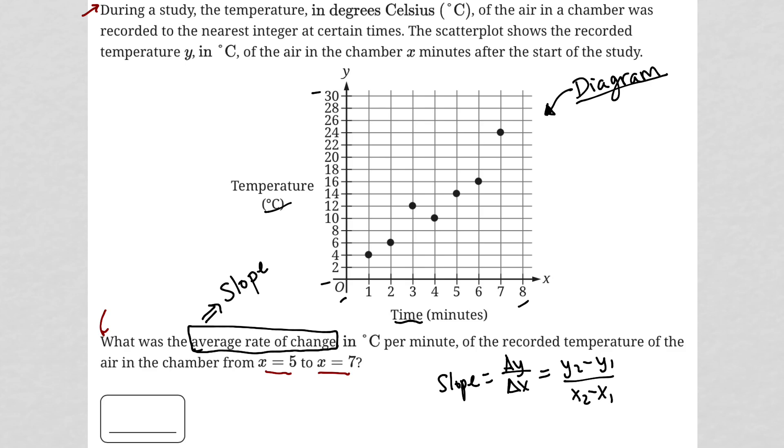We have our two x values provided for us. I'm going to go with the larger minus the smaller. So in our denominator here, our x2 would be seven, our x1 would be five. Now, what is the temperature that goes along with those x values? So let's check our diagram.